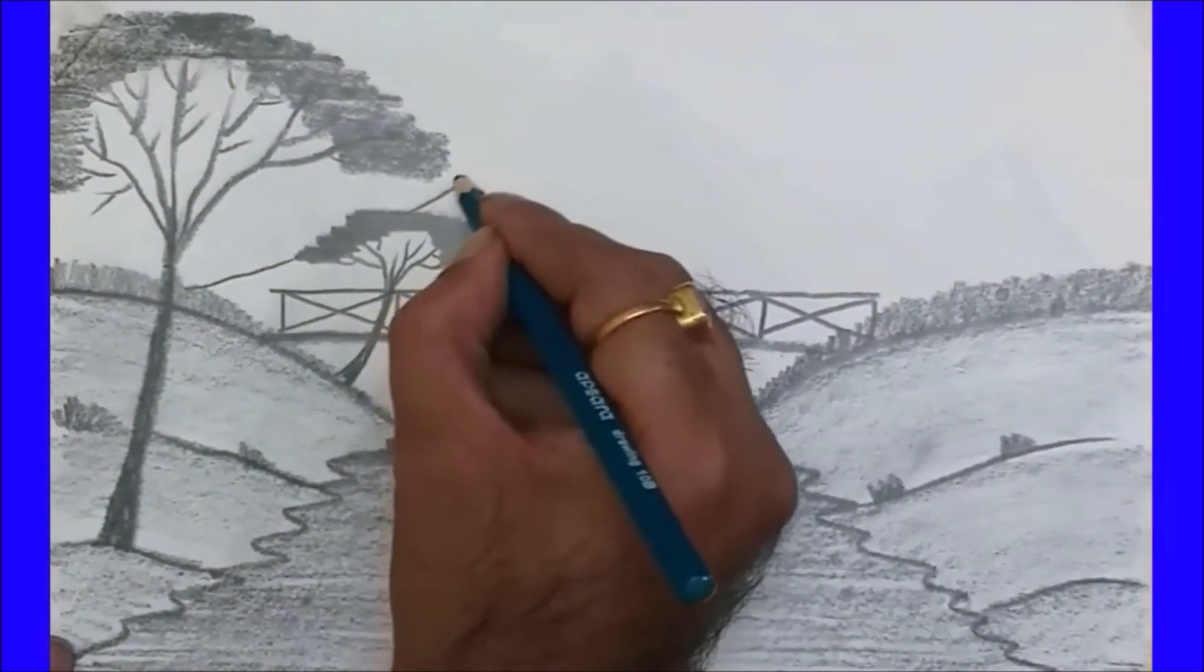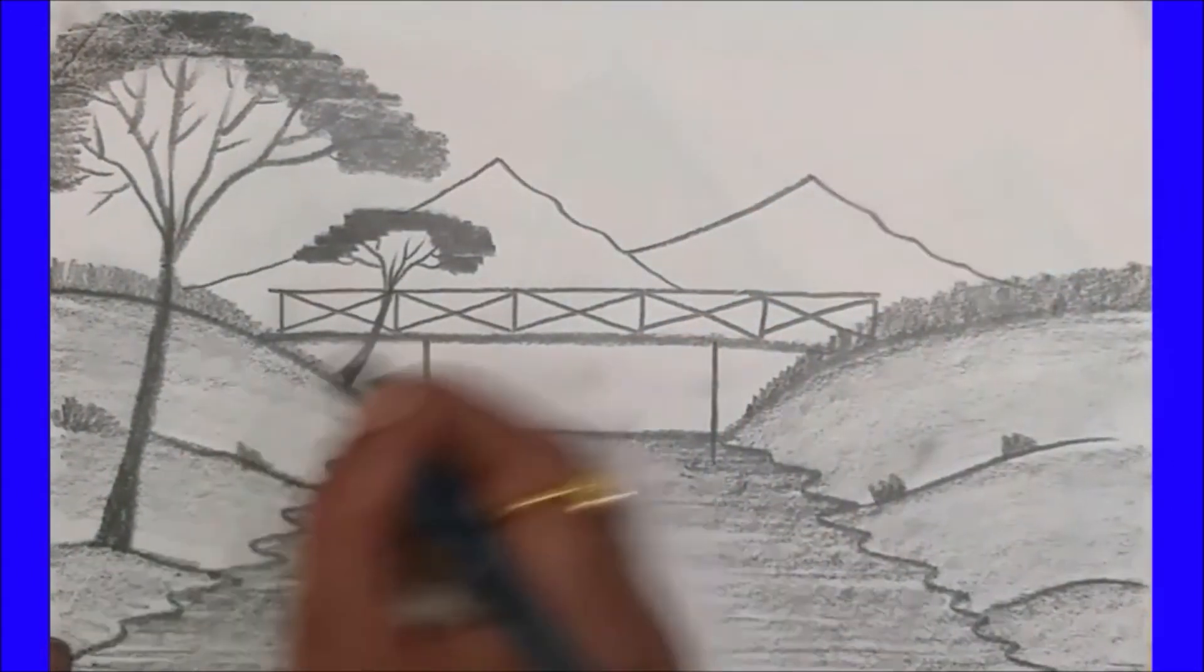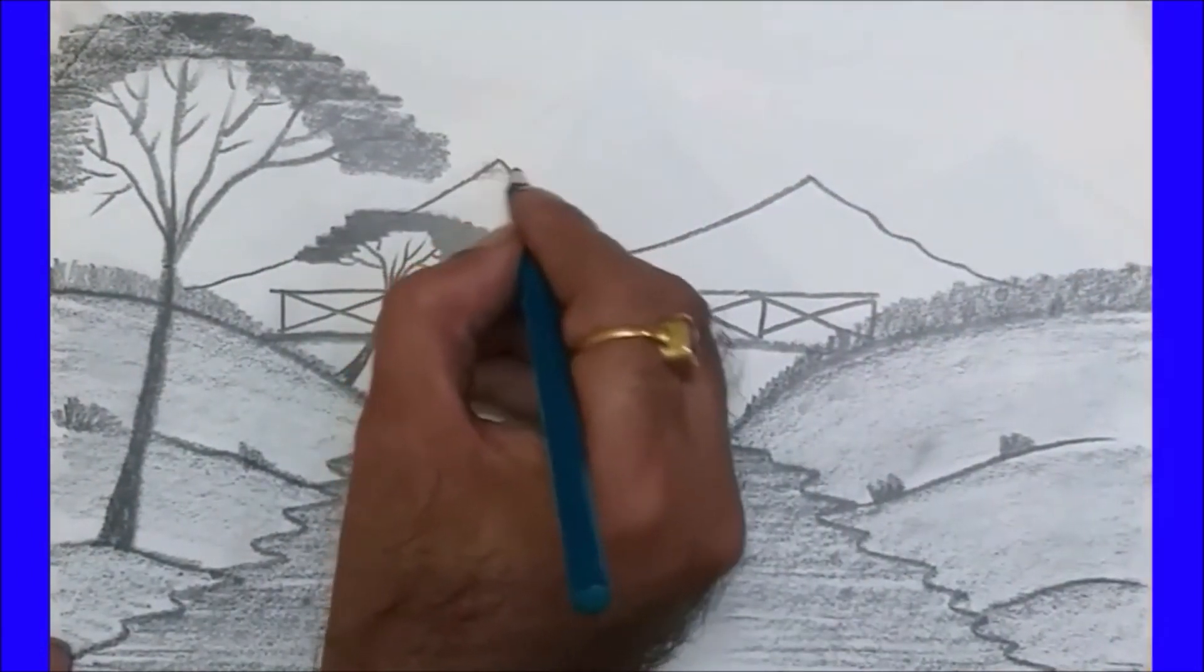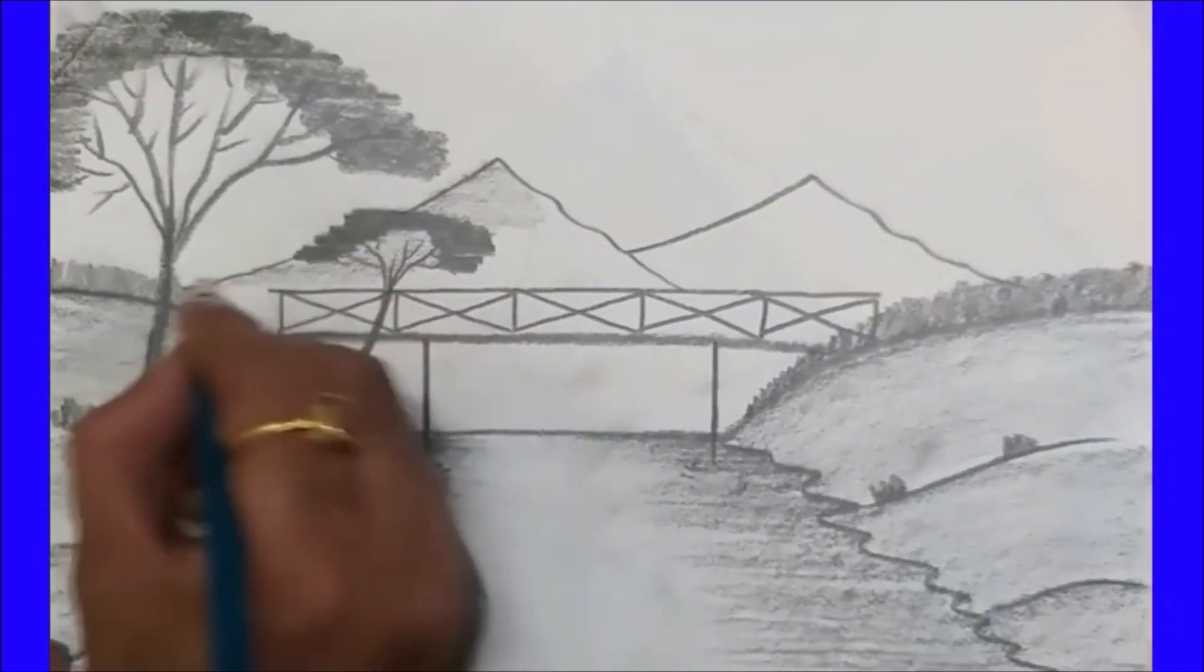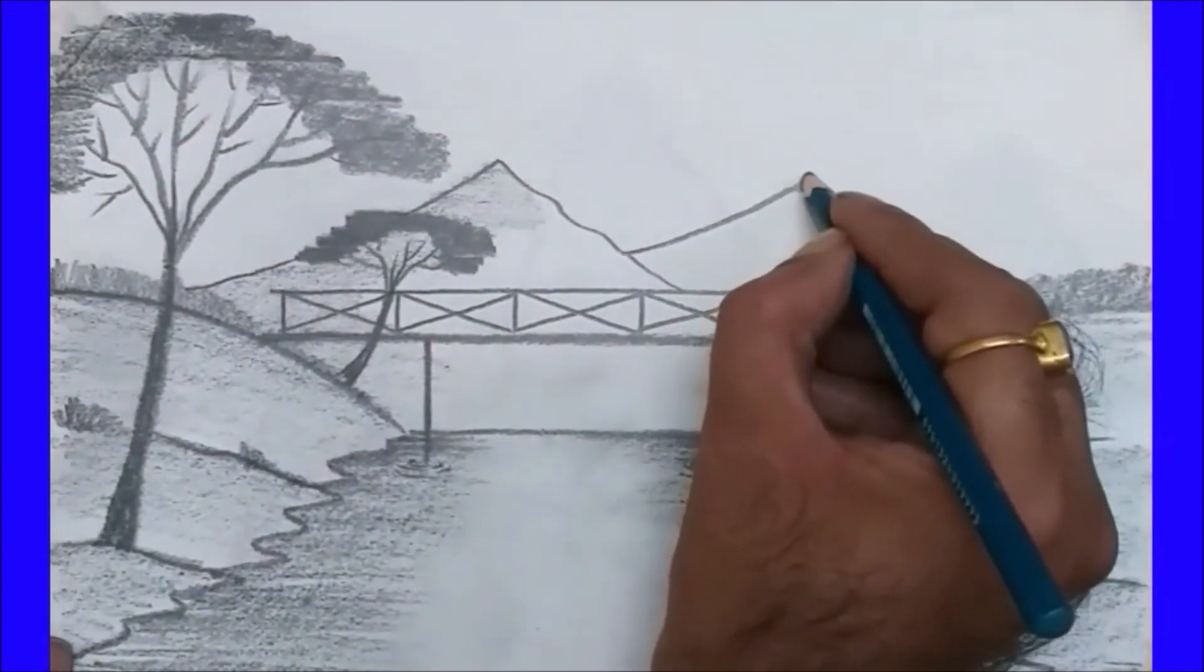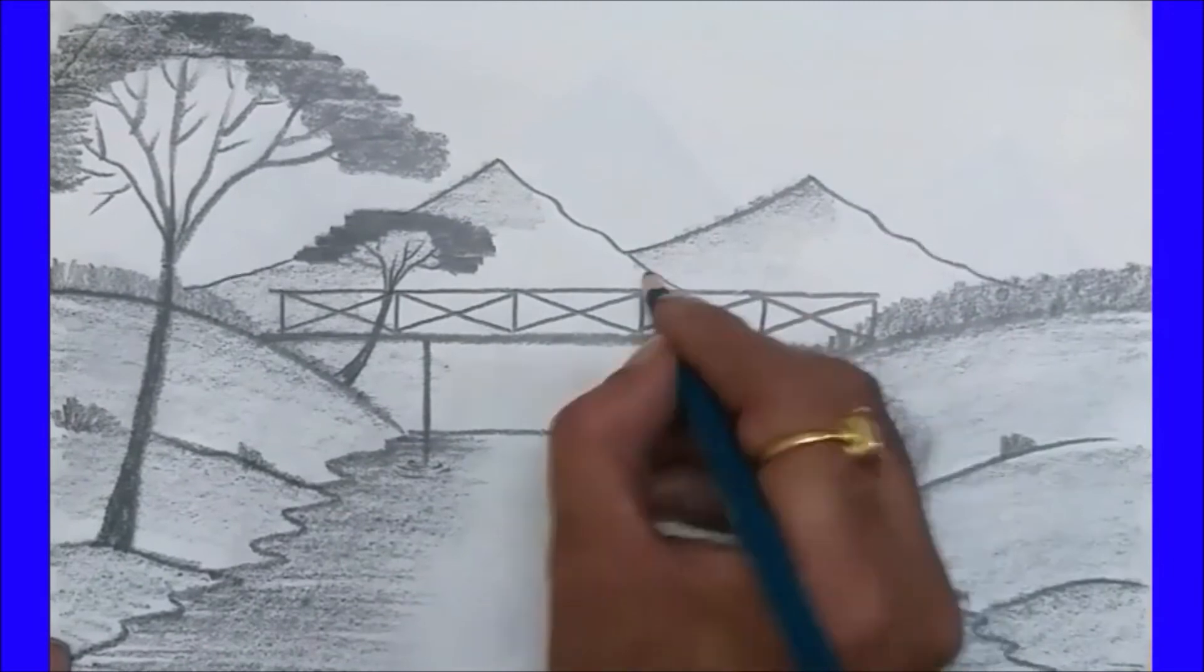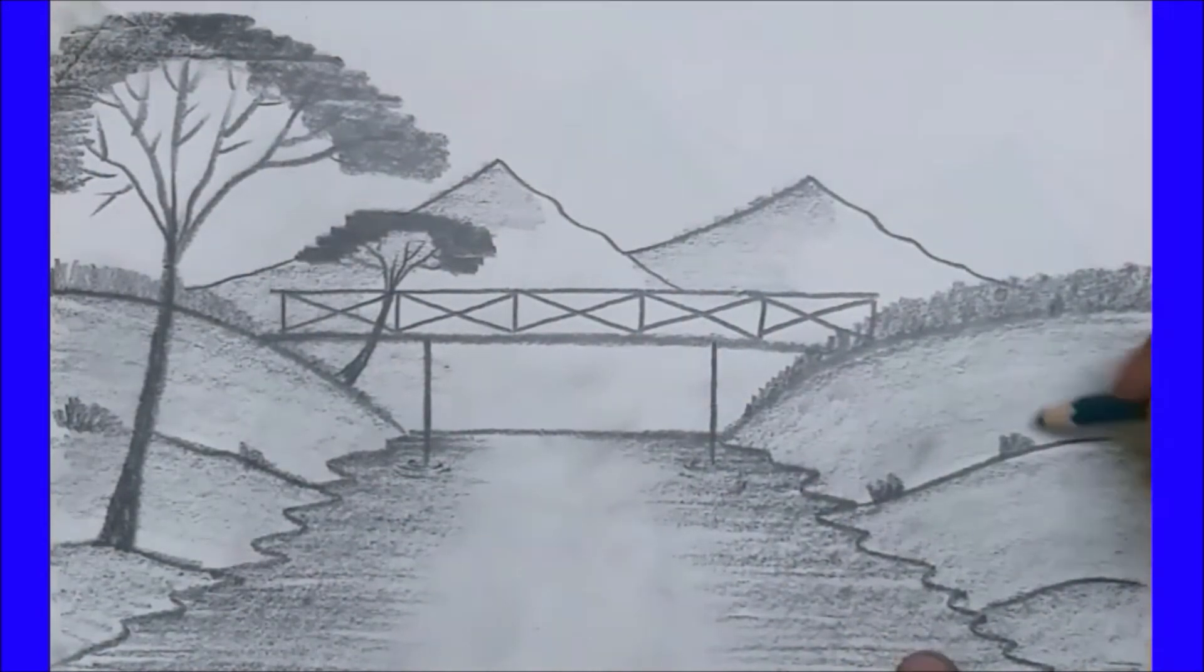Again light toning at the right side. Always show darkness at the right side and lightness at the left side. Here my pool is ready, my mountain is ready, my tree and bushes are also ready.